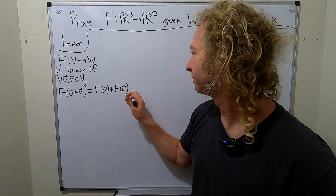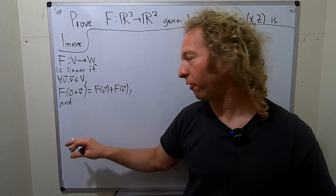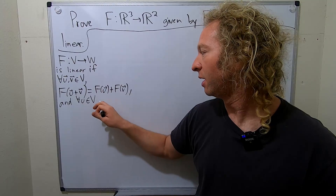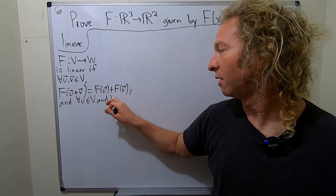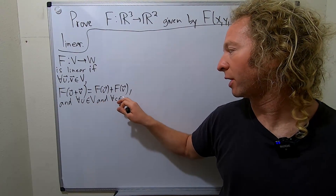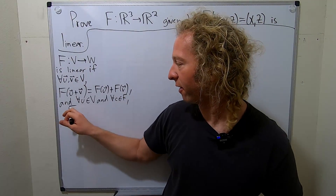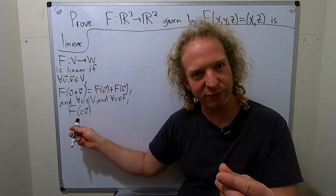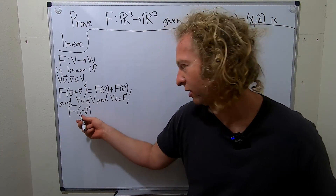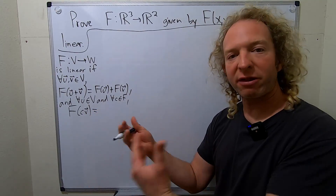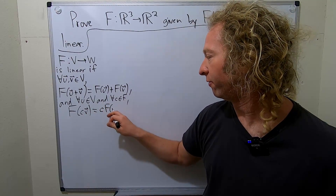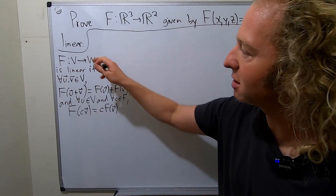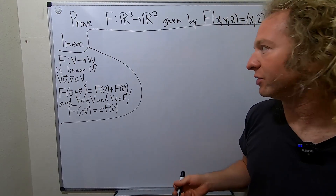And the other condition: for all u in our vector space V, and for all c in our field, which I'll call capital F, f of cu — so here we have scalar multiplication. A scalar is an element of the field, like a number, like three or four or five. You can pull the number out of the function — it's c times f of v. Notice there's no arrow over the c; that's to indicate it's a scalar and not a vector. So that's the definition of a linear transformation.